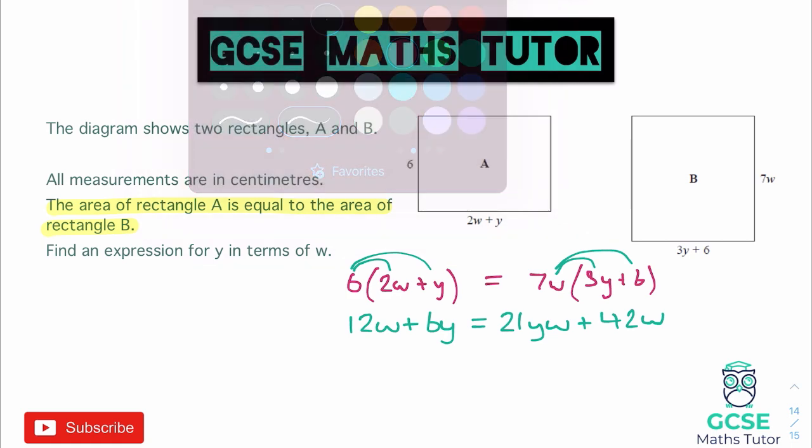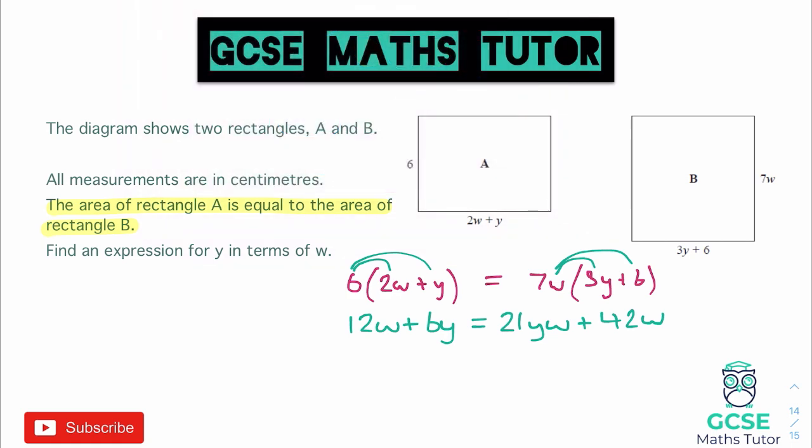Now, how are we going to make this Y equals? Well, I want to get all of the Y pieces on the left hand side and all of the W pieces on the right hand side. Of course, we could move the Y's to the right and W's to the left, it doesn't really matter, but I'm going to choose to move them to the left. So I'm going to minus 12W from both sides, and at the same time I'm also going to minus this 21YW from both sides.